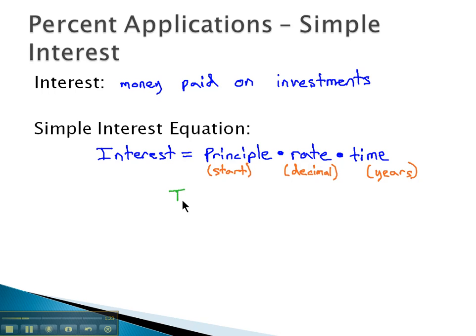And again, this equation is sometimes abbreviated I equals PRT, principal times rate times time, just to make it easier to write down.